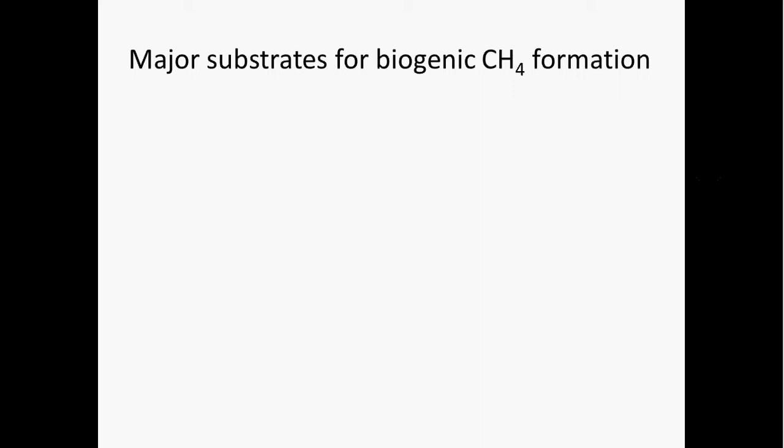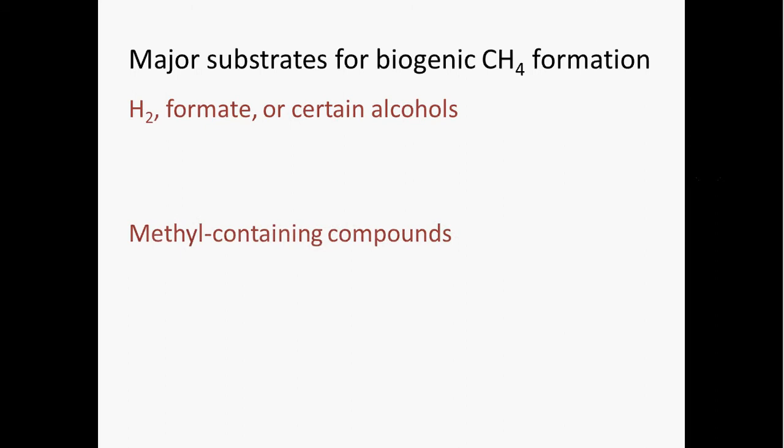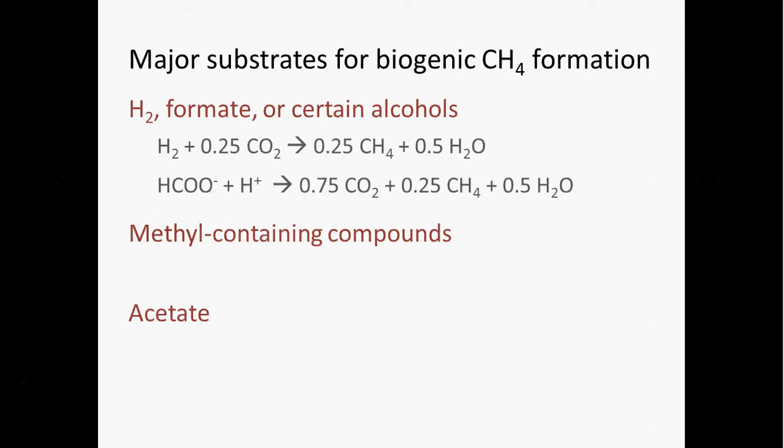The major substrates for biogenic methane formation fall into three categories. Methanogens can use hydrogen formate or certain alcohols. They can use methyl containing compounds like methanol or trimethylamine. And they can also use acetate. Let me just provide you with a few example reactions to illustrate these different substrates. So this is microbes using hydrogen as their electron donor and CO2 as their electron acceptor to produce methane. Here's a reaction with formate as the energy source. Here's a reaction with methanol. And then an example with acetate.